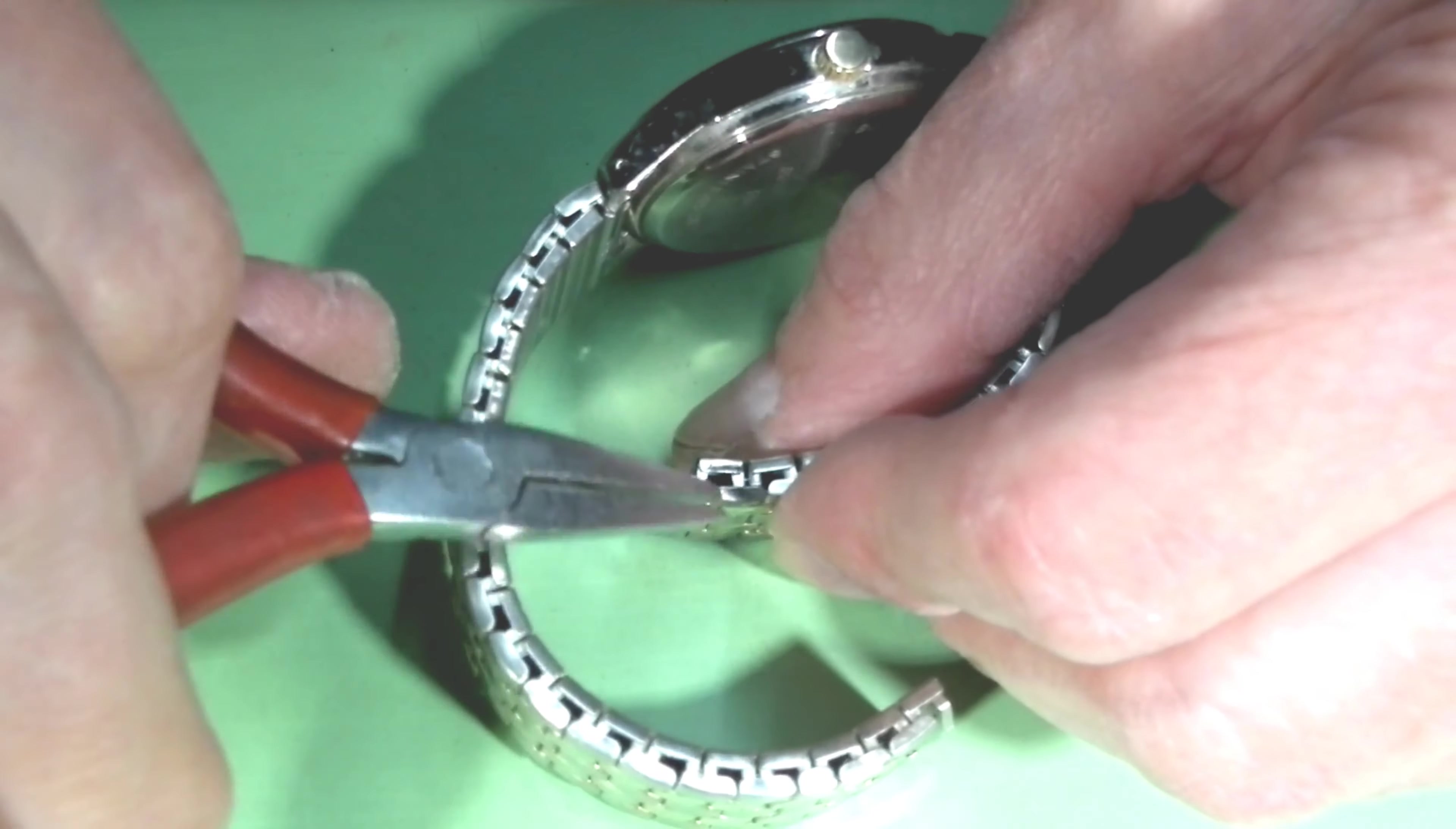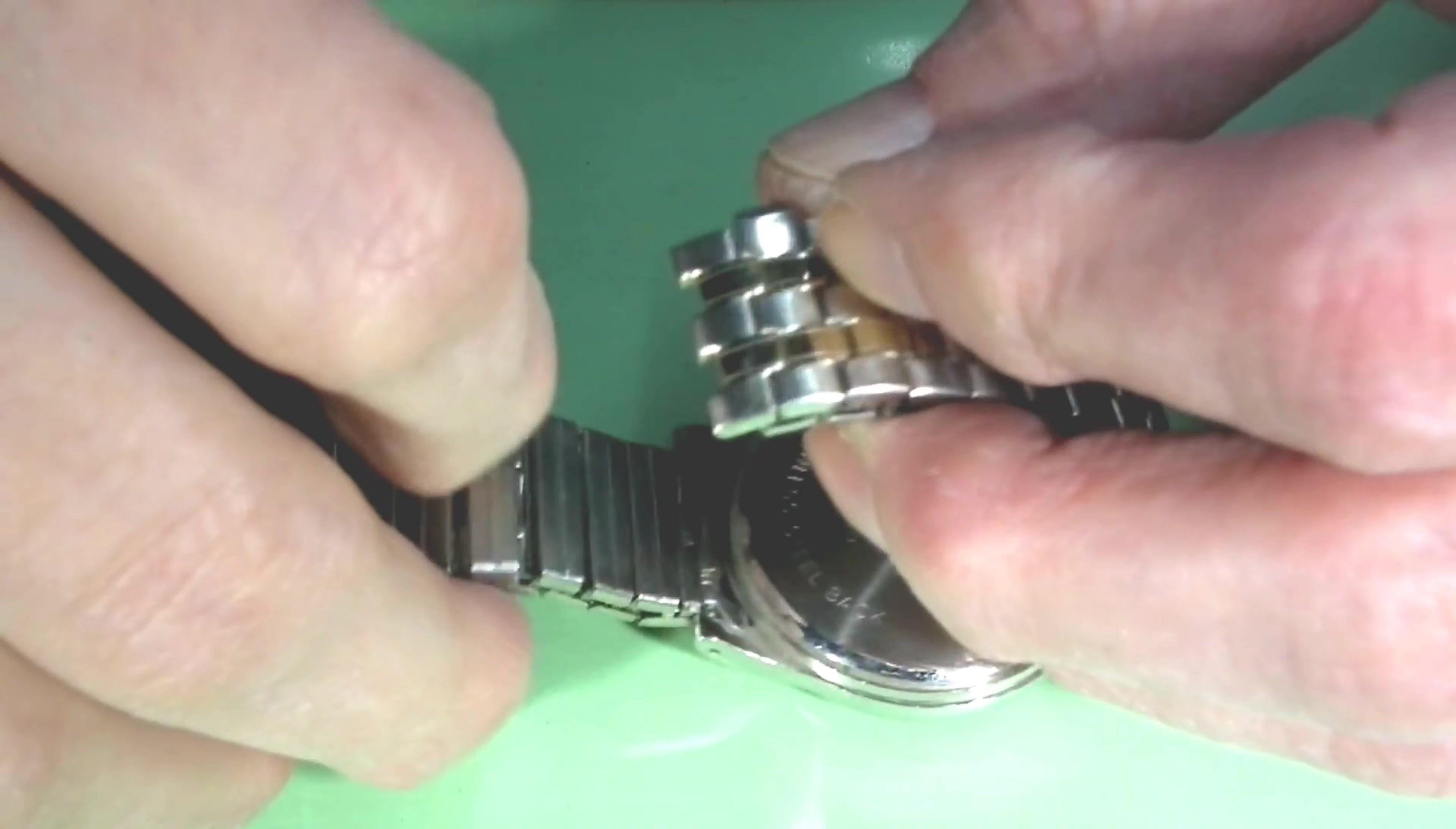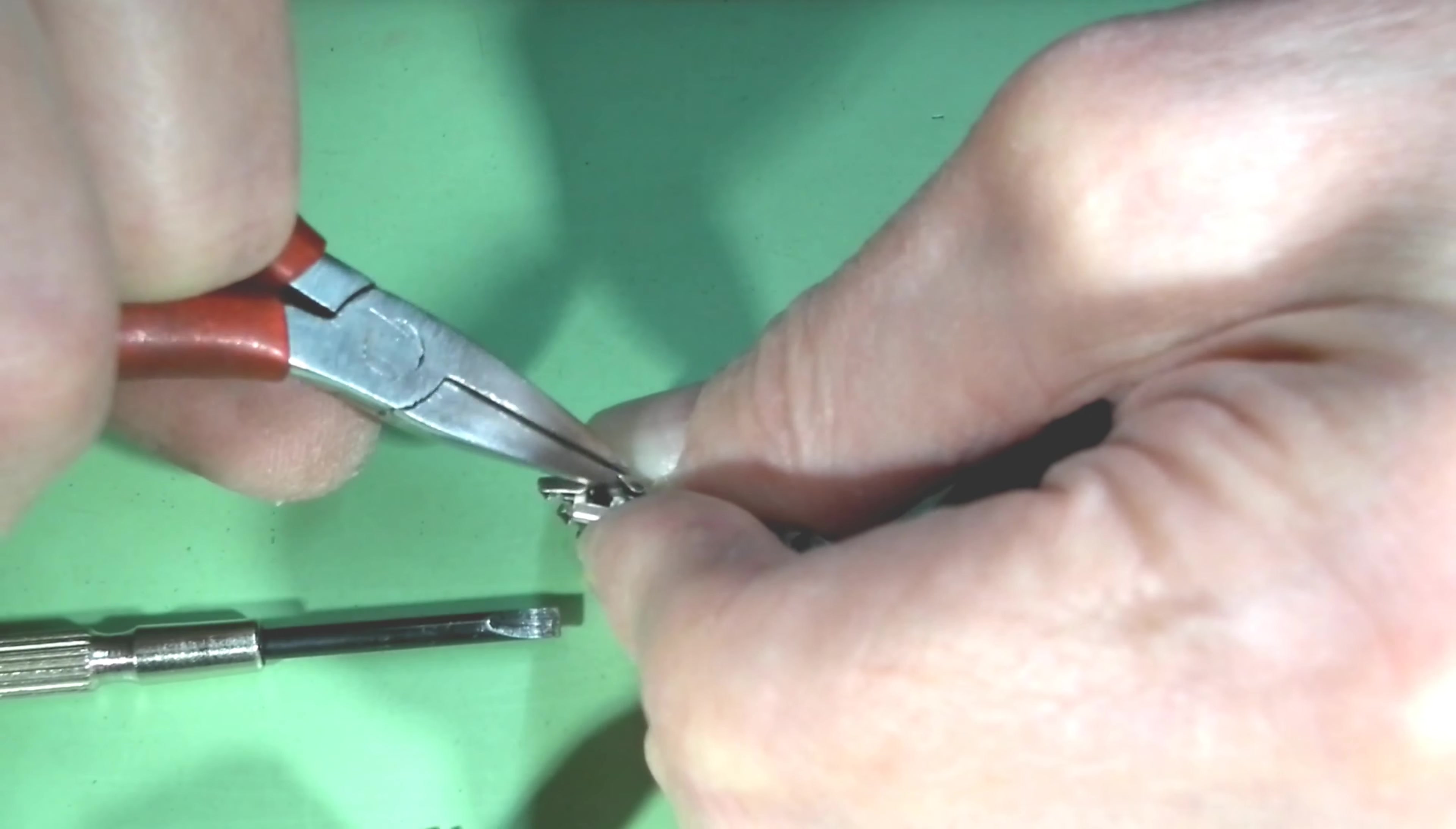Most of the work consists of bending the side tabs of the bracelet links to get access to the small hooks that keep the bracelet links together. Then I can lift the hooks, connect the bracelet links, and hook them together.